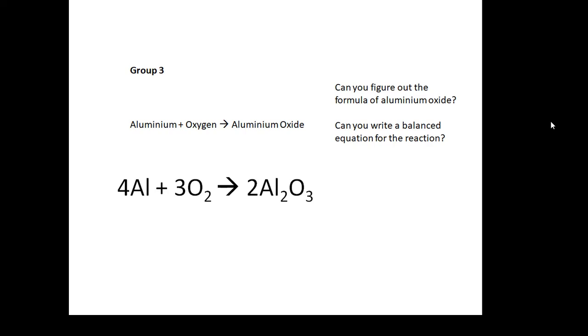And it is Al2O3. Can you figure out why it's Al2O3? Aluminium's group three, Al3+, so you're going to need two aluminium ions for every three oxygen ions. And then balance the equation.